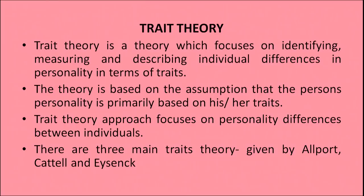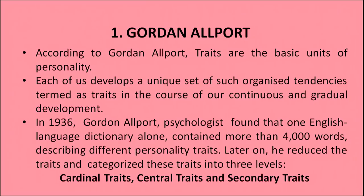There are three main trait theories given by Allport, Cattell and Eysenck. According to Gordon Allport, traits are the basic units of personality. Each of us develops a unique set of such organized tendencies termed as traits in the course of our continuous and gradual development. In 1936, Gordon Allport found that one English language dictionary alone contained more than 4000 words describing different personality traits. Later on, he reduced and categorized these traits into three levels: cardinal traits, central traits and secondary traits.